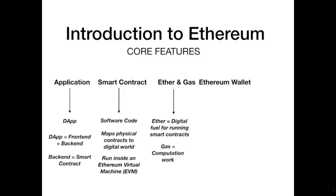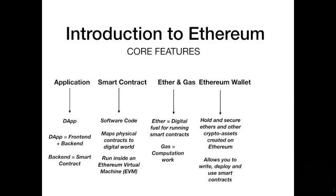The next component is the Ethereum wallet. The Ethereum wallet allows you to hold and secure ethers and other crypto assets created on the Ethereum platform. It allows you to write, deploy, and use smart contracts. During this course, we will look at how you can use the Ethereum wallet to deploy and execute smart contracts. The Ethereum wallet maps to the application layer of our reference architecture.